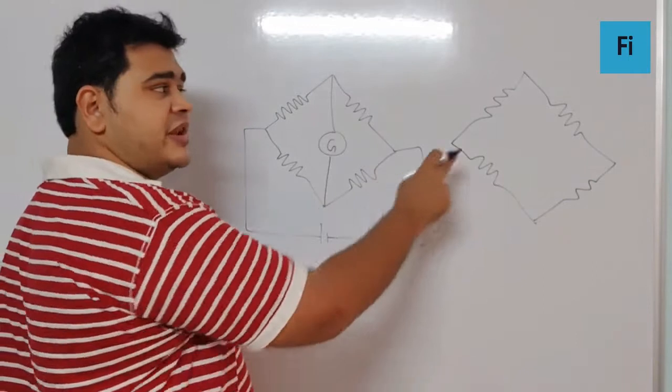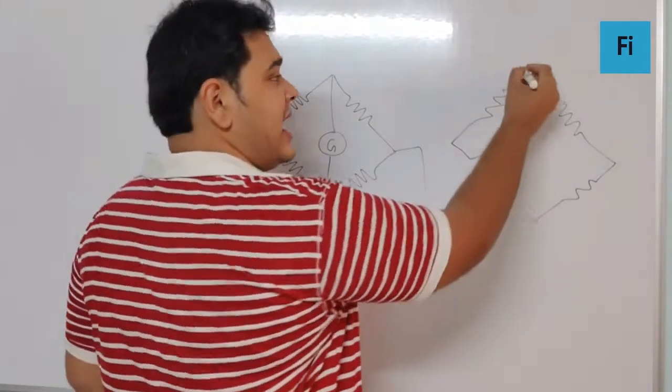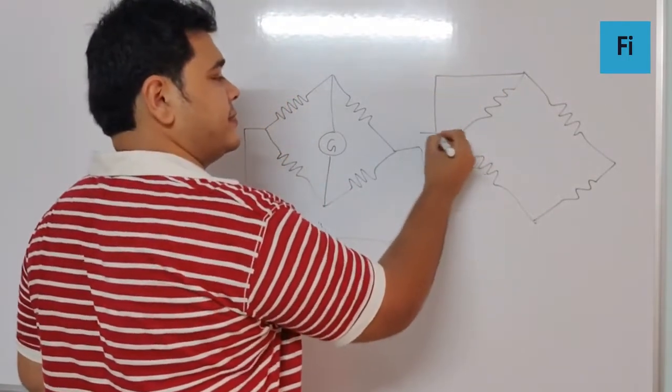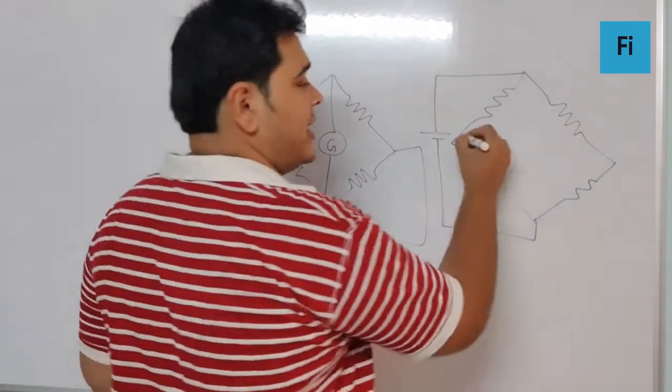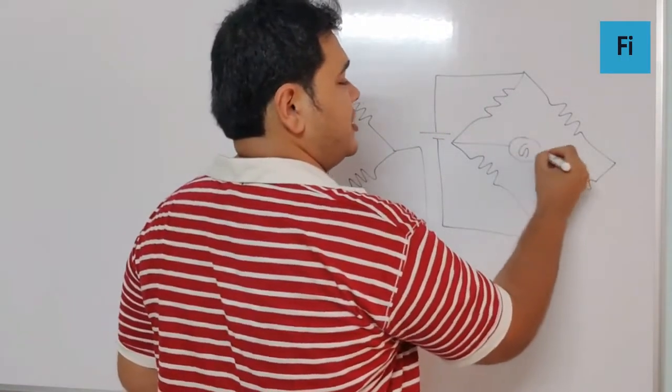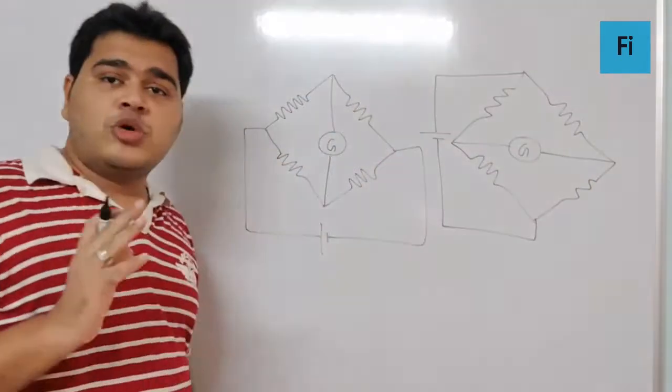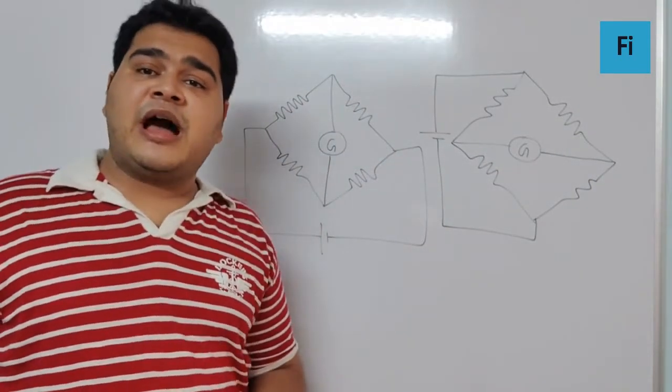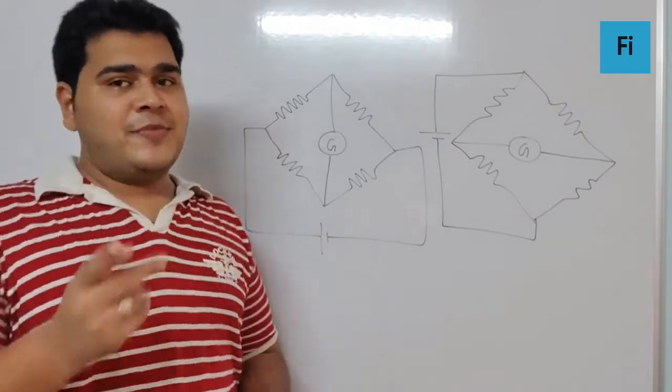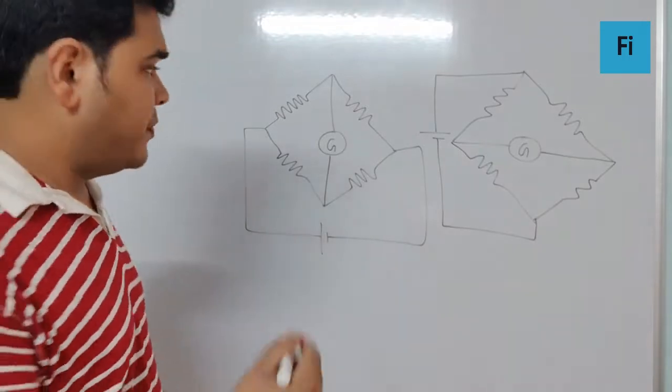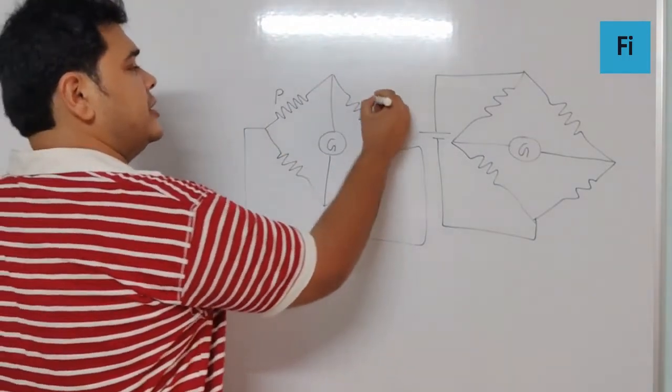Between the two ends where there was initially the galvanometer, I will have the battery like this, and at the other two ends I will have the galvanometer. This is what I mean when they say to interchange the position of galvanometer and the battery. Now what happens if I say this is P, Q, R, S?